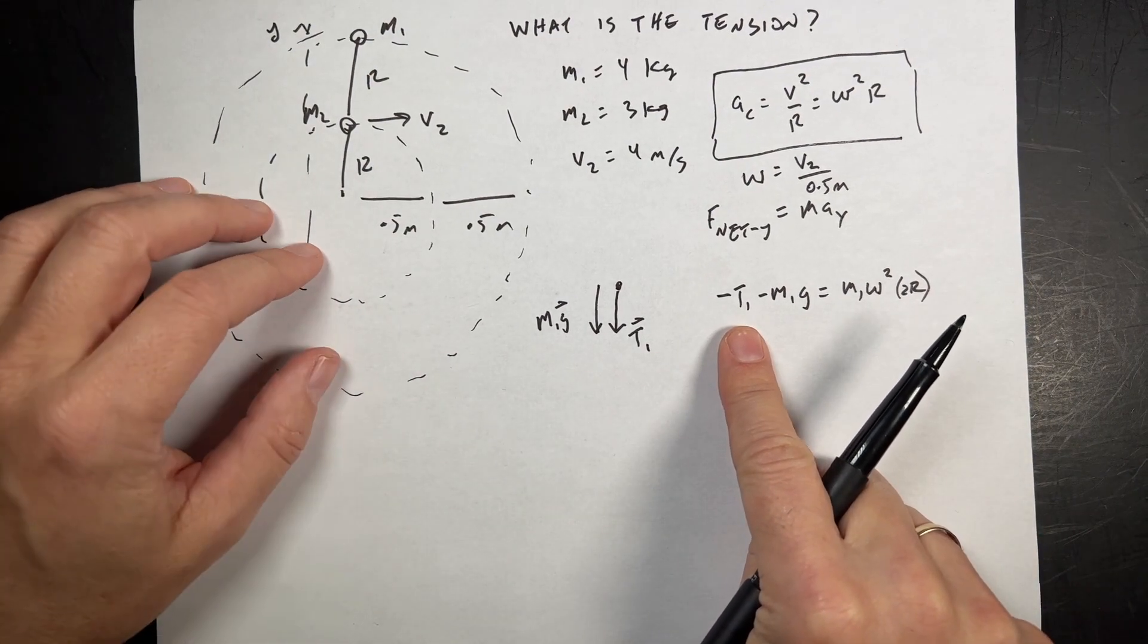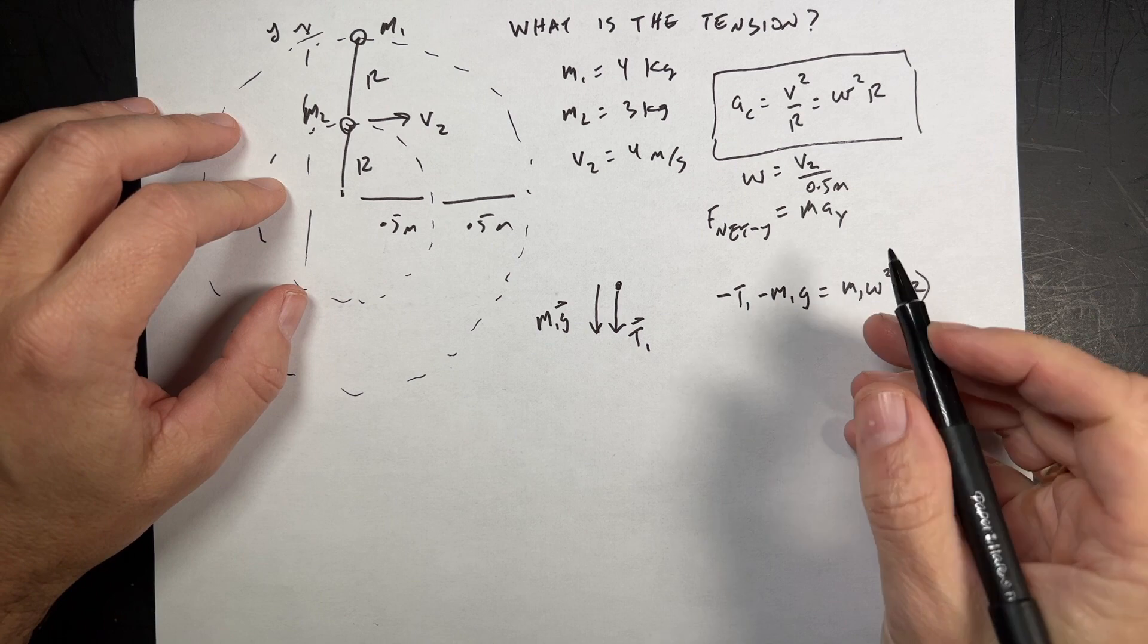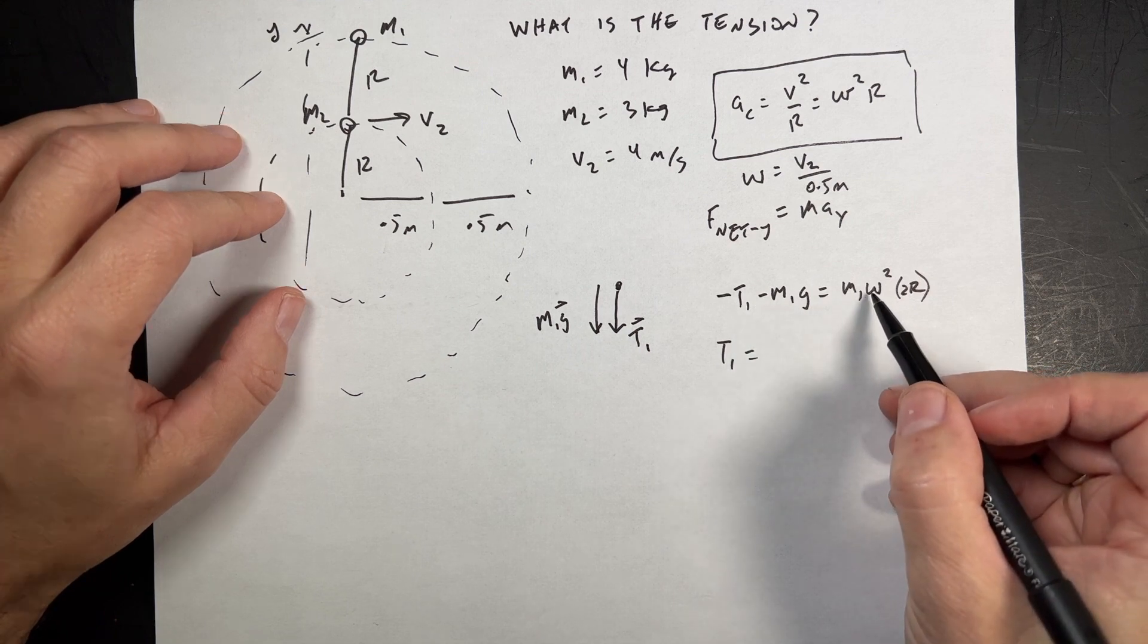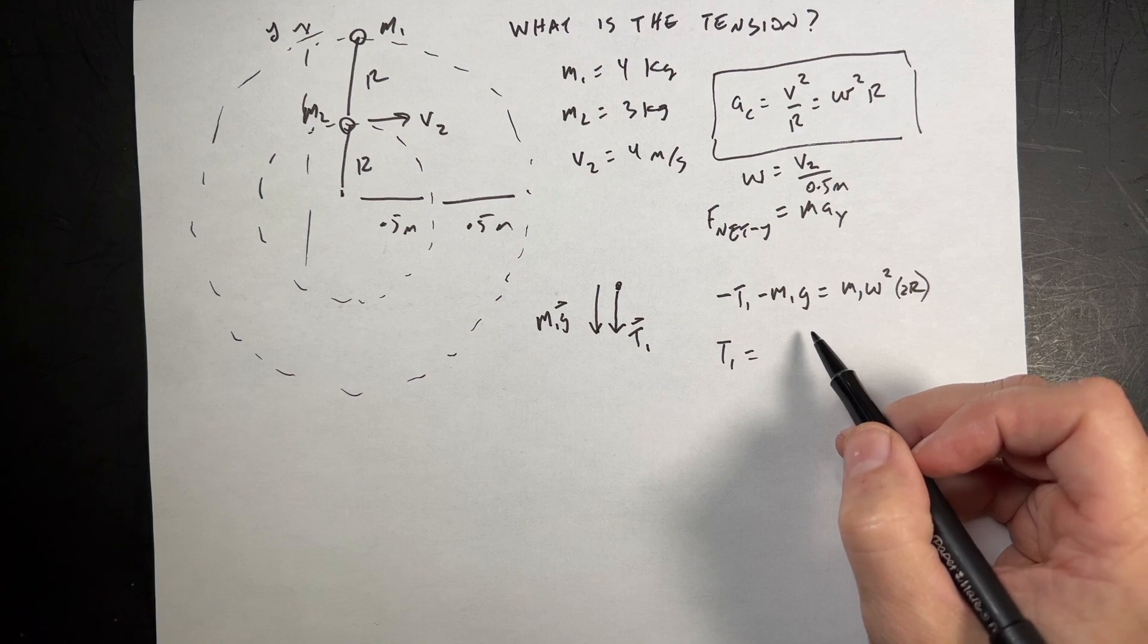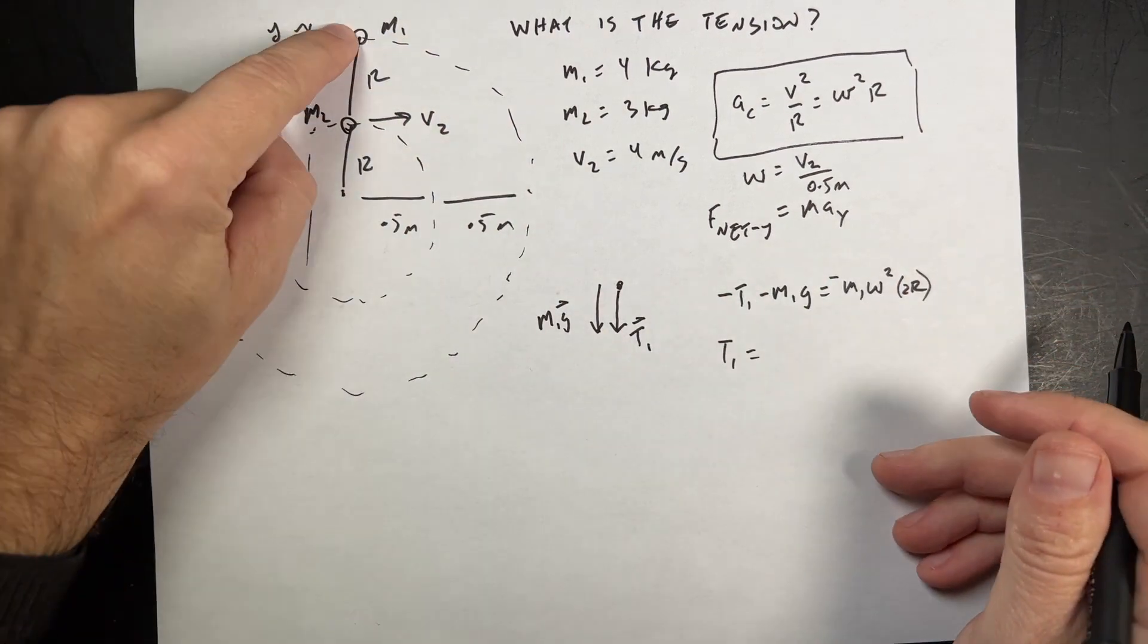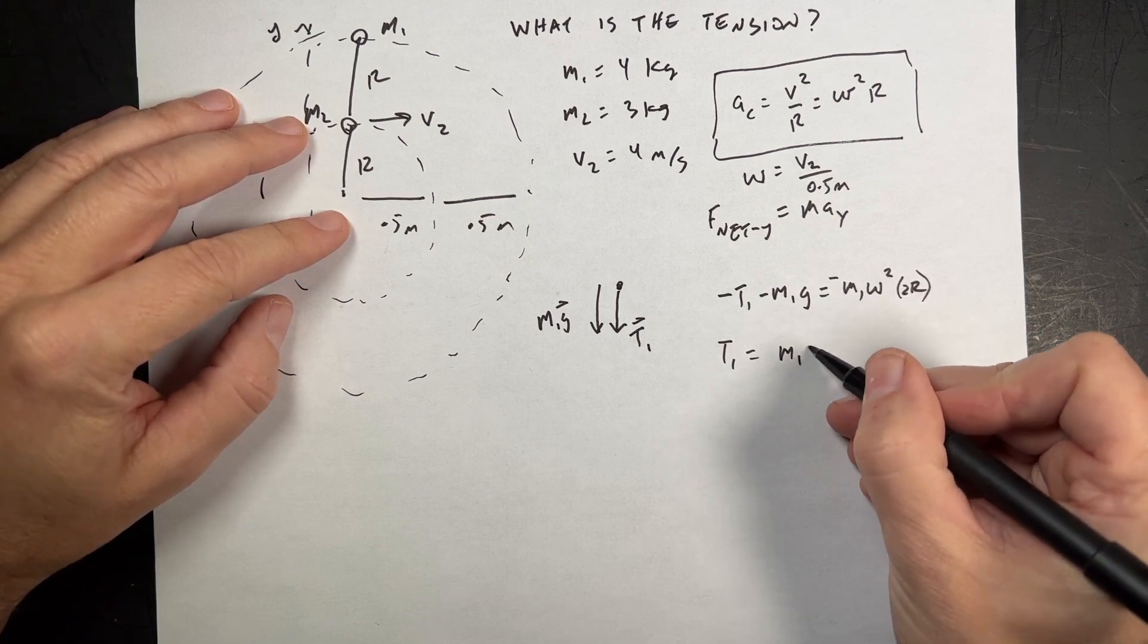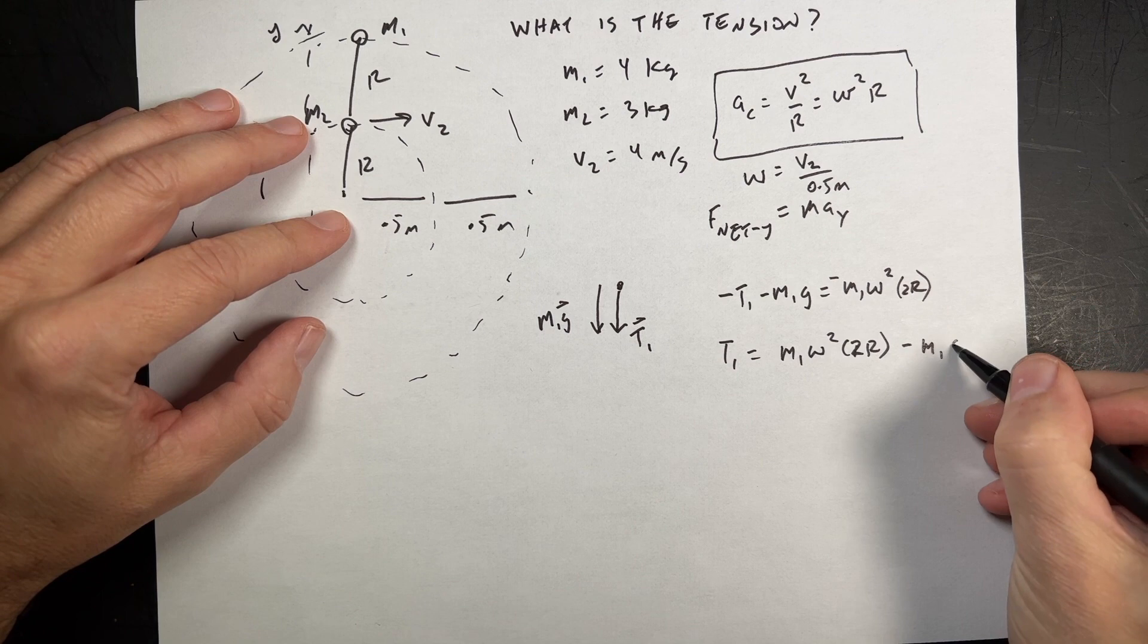Can I solve for t1? Yes. I actually can. Right? If I know all these values. So I'm just going to add that to the other side and subtract this. I get t1 equals, wait, add that over here. I'm getting negative. Minus t1. Oh, this is minus. That's why. The acceleration is in the negative y direction. So that means it's going to be equal to, if I add that, because this is going to be m1 omega squared 2r minus m1g.